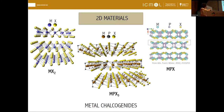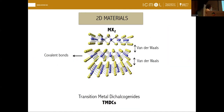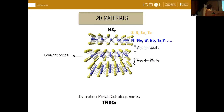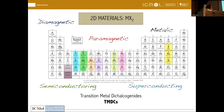Among them, we focus on transition metal dichalcogenides. These are also stacked layers like graphite, with van der Waals interactions between layers. Inside each layer, we have a sandwich formed by a transition metal between two chalcogenides. By combining different transition metals and different chalcogenides, we get materials with different properties: semiconductors, superconductors, paramagnetic, diamagnetic, and so on. Even inside one single material, we can get different properties depending, for example, on the thickness.